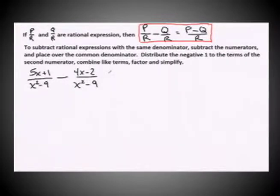In words, to subtract rational expressions with the same denominator, subtract the numerators and place that over the common denominator. Distribute the negative one to the terms of the second numerator. Combine the like terms, factor, and simplify.